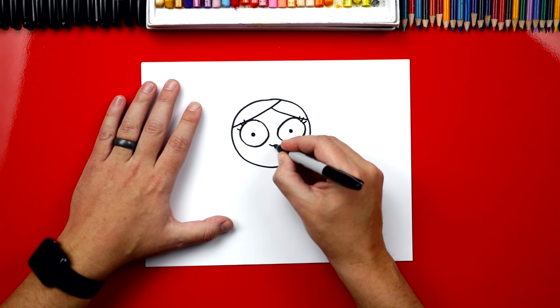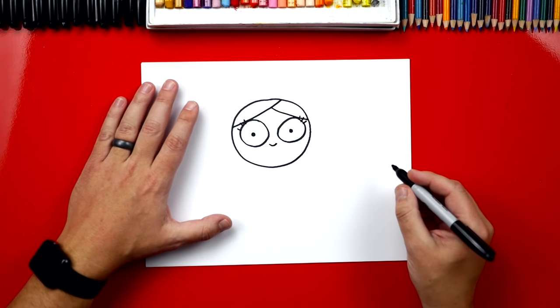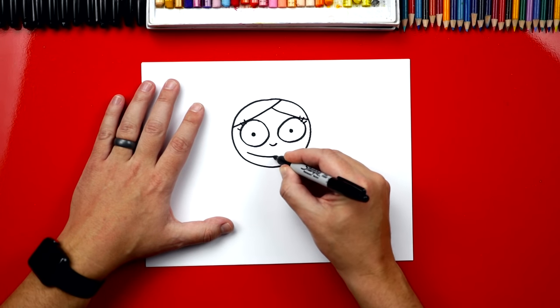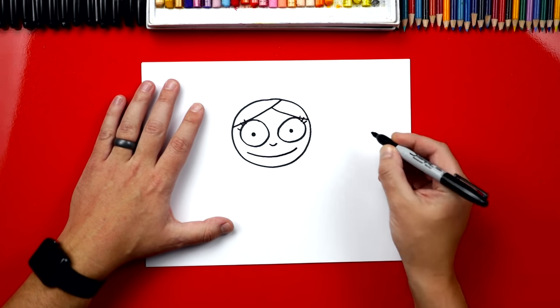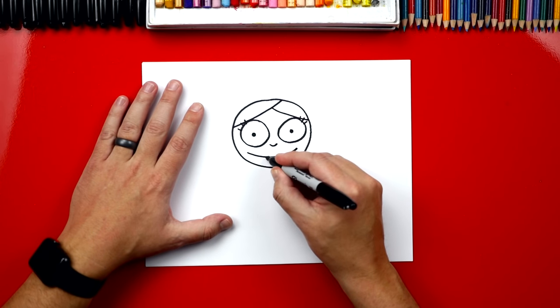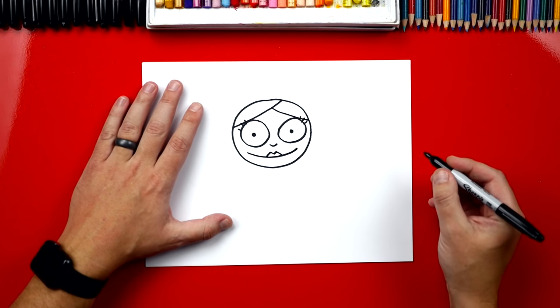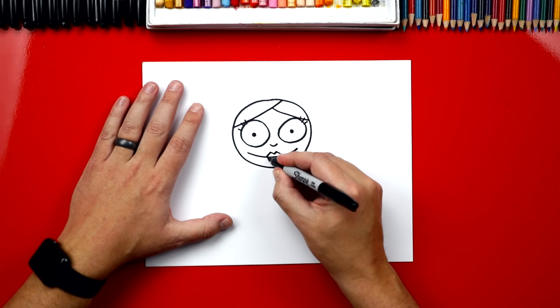Next let's draw her nose. I'm just gonna draw a little U in between her eyes. Then we can draw her mouth, and we're gonna draw a big smile. Now right in the middle of her smile she has her teeny little lips, so we're gonna draw an upside-down W for the top part and then a U for the bottom.